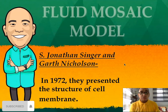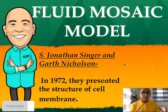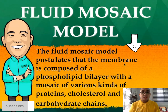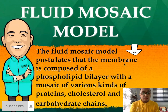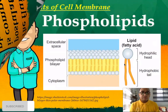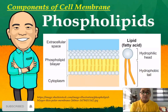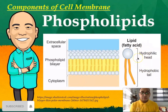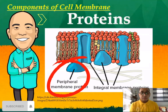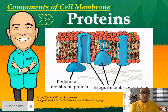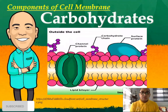This is what we call the fluid mosaic model, introduced by Jonathan Singer and Bart Nicholson in 1972. This model postulates that the membrane is composed of a phospholipid bilayer with a mosaic of various kinds such as proteins, carbohydrates, cholesterol, and some chains. Phospholipids have a hydrophilic head (polar) and a hydrophobic tail (nonpolar) — attracting water and repelling water respectively. Proteins, specifically peripheral and integral membrane proteins, aid molecules in entering or passing through the cell. Carbohydrate chains are also attached to the cell membrane.